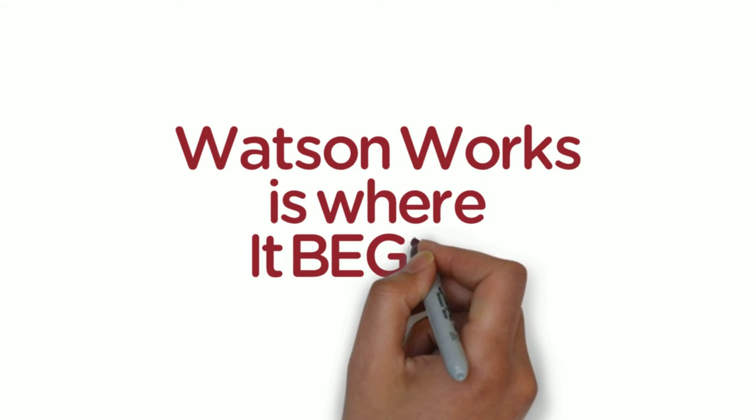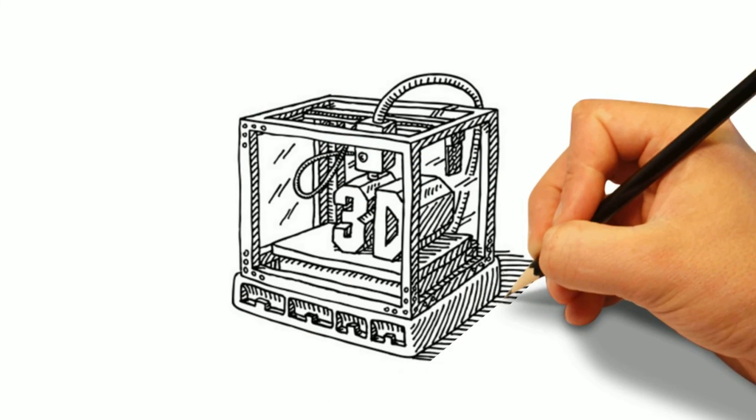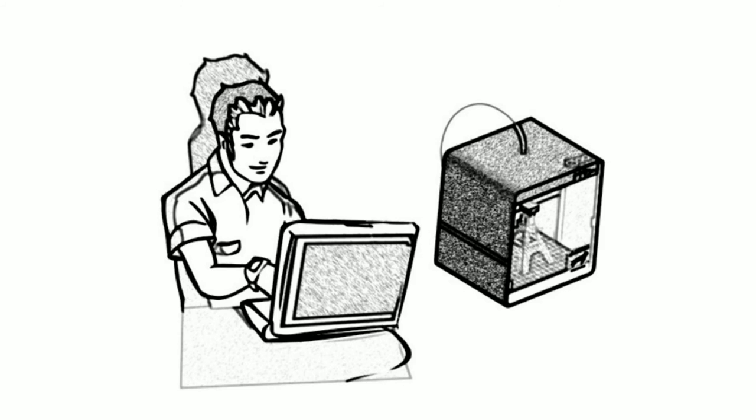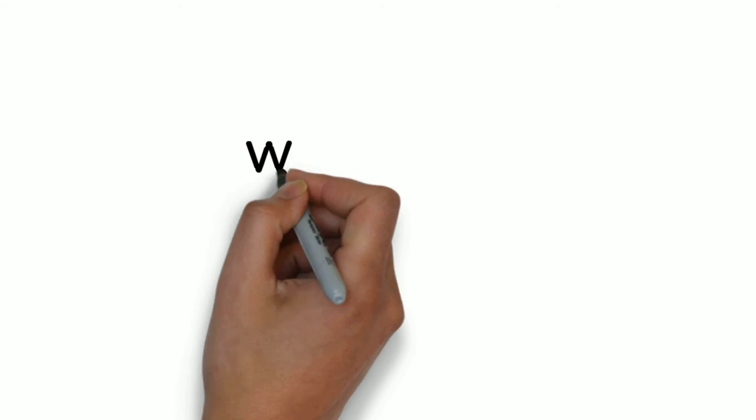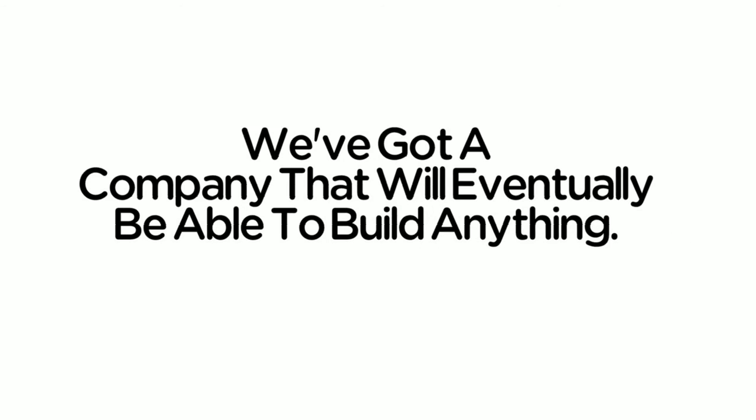That's what I want to do, and Watson Works is where it begins. That's also why I have chosen to start our manufacturing capability with 3D printing. It's one of the most approachable technologies available. A kid can come up with an idea, draw it, and make it in a space the size of their bedroom. Put these kids together, and we've got a company that will eventually be able to build anything.